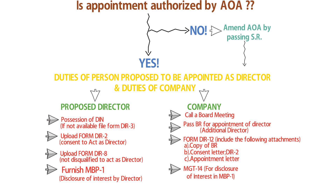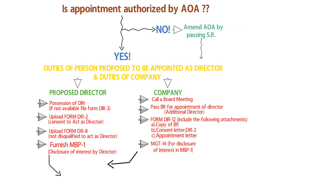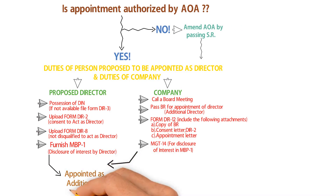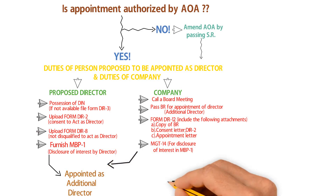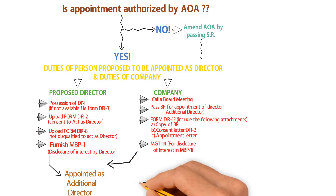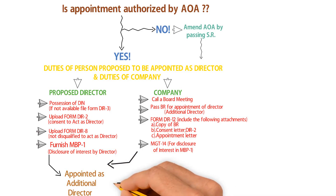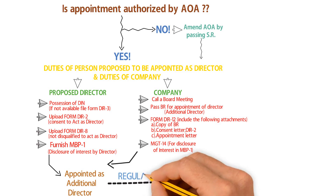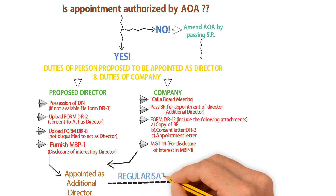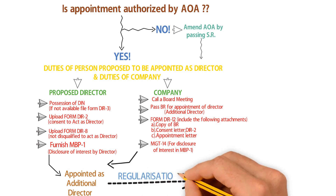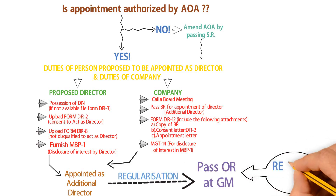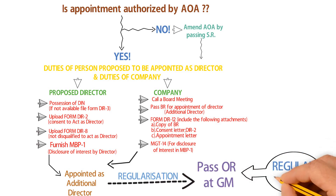The appointment of the additional director is now complete. However, at the subsequent AGM, such additional director shall retire if not regularized by the company. Regularization of the additional director is done by passing an ordinary resolution.